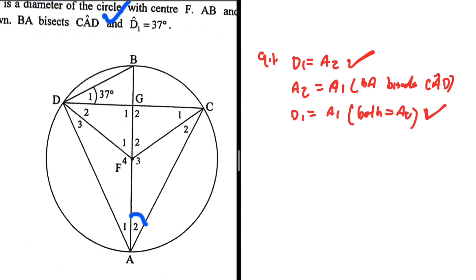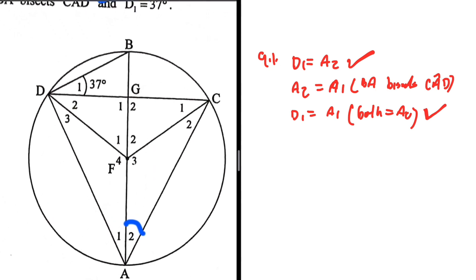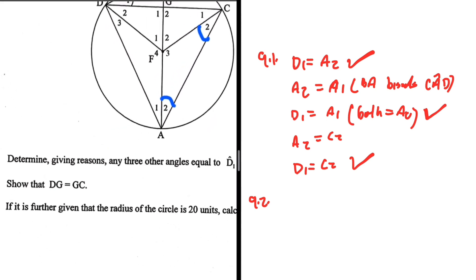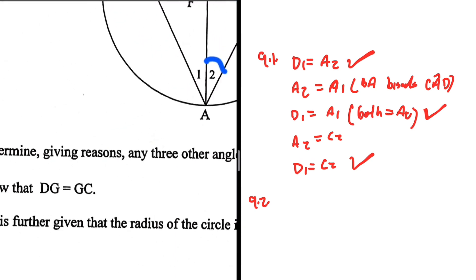Now let's look for the third angle. A2 should equal C2 because they are subtended by equal chords — FA is a radius and FC is a radius. FA subtends C2 and FC subtends A2, so A2 equals C2, subtended by the same chord. We can therefore conclude that D1 equals C2. So there we go — three angles equal to D1.